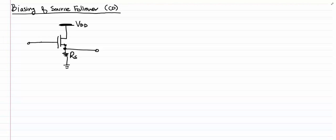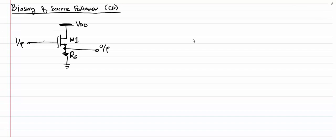Here I have drawn the configuration for the source follower where the input is applied at the gate and the output is sensed on the source terminal. RS is used to provide the path for the bias current to flow from VDD to the ground.